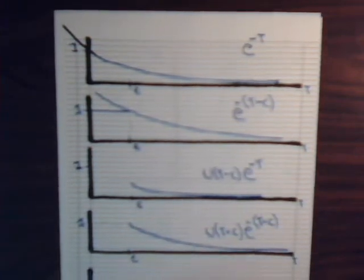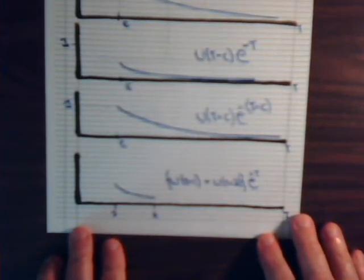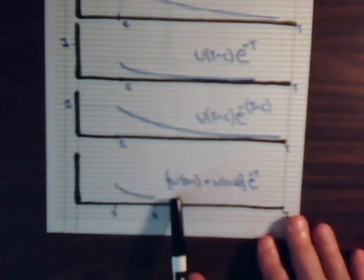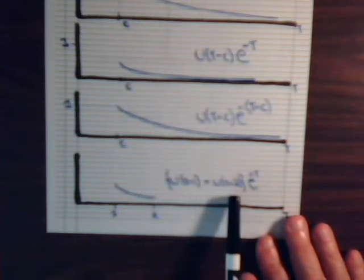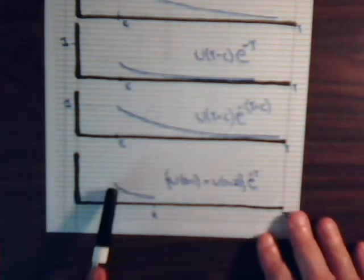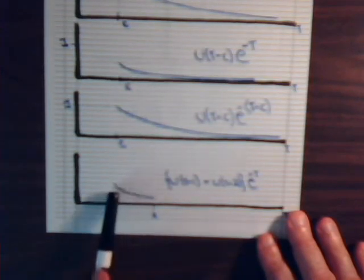Now, what if we have, say, u of t minus 1 minus u of t minus 2 times e to the minus t. That's just going to be this curve segment right here. And let's see if we could get a better feel for that.